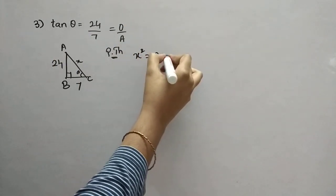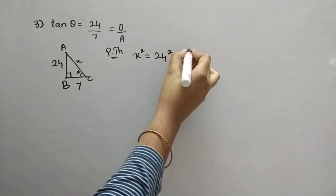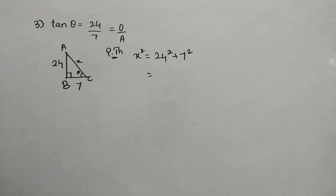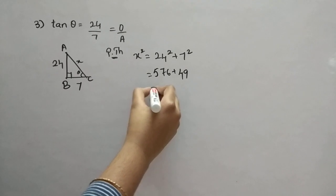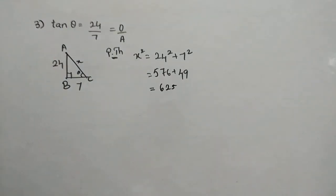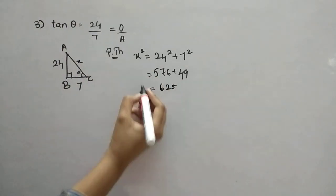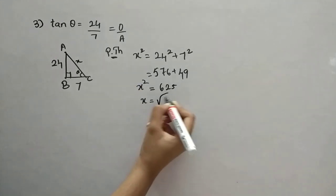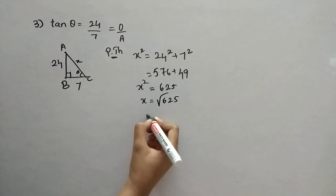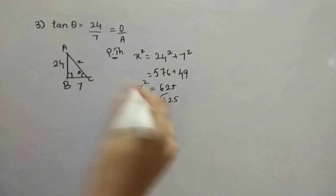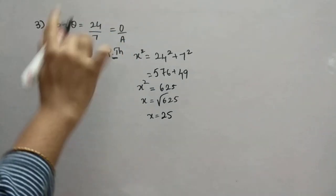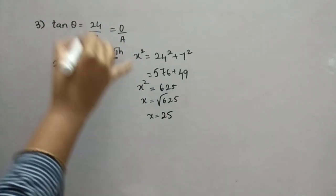X square is equal to 24 square plus 7 square. So, when you do this, when you solve it, what we are going to get? So, 576 plus 49 when you square it. Now, we will add this. Answer is 625. That is X square, not X, right? So, X value is root of 625 and X value is 25. So, this is 25. Now, instead of X, put 25.